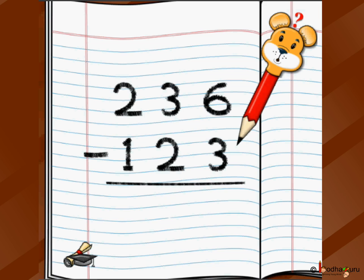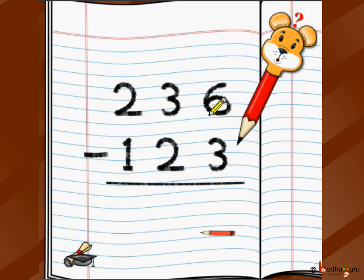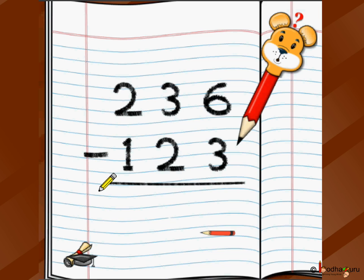You write 236 on one line, then write minus 123, and ensure you write digit below digit: ones position below ones, tens below tens, hundreds below hundreds. Then you write a minus sign and an underline below it.